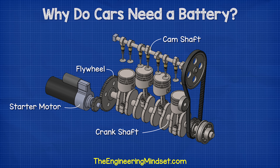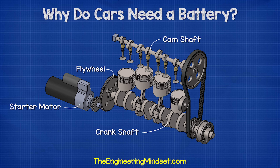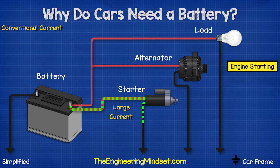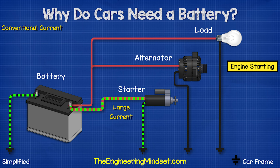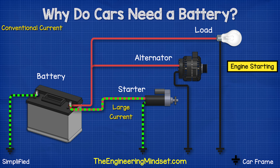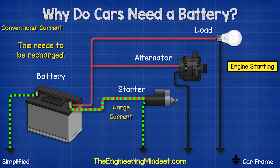The starter motor needs to provide a huge amount of force to be able to turn the flywheel. So the starter motor will draw an extremely large current, possibly hundreds of amps, but this is only for a few seconds. This large current demand is going to reduce the energy storage of the battery, so we will need to top this back up.